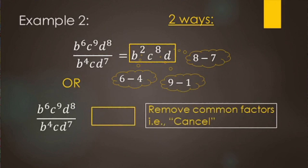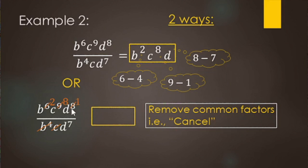Using the remove common factors method: for the B's, remove four factors from both — six minus four leaves two B's in the numerator, none in the denominator. Remove one factor of C from the nine, leaving eight C's and none in the denominator. Remove seven factors of D from the eight, leaving one D and none in the denominator. So the answer is B squared, C to the eighth, D — we don't write the exponent of 1.